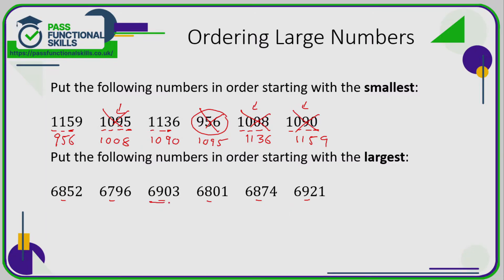Of six, sevens, and nines, nine is the largest, so we need to be comparing 6903 and 6921 — both begin with six nine. The next digit is zero or two, and since two is larger than zero, 6921 is the largest and 6903 is the next largest.